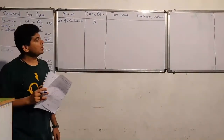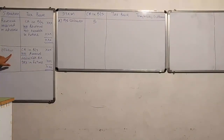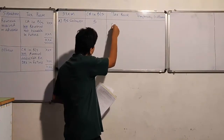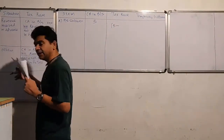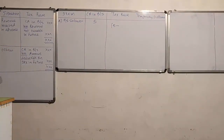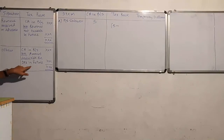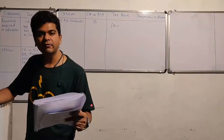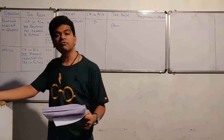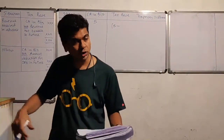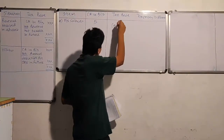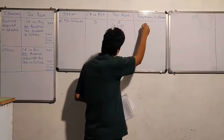Outstanding salary is not revenue received in advance, so it falls in the other category. Starting with the carrying amount of five lakhs, less the amount deductible for tax in future — since the deduction has already been claimed, the amount deductible in future is zero. So the tax base is five lakhs and the temporary difference is zero.